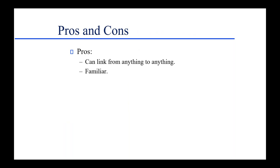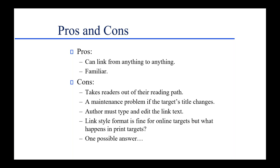What are the pros and cons? There are a couple of really powerful pros: first, you can link from anything to anything — from a word out to an external URL, from a graphic to another topic in your Flare project, from a word to an external PDF file. And it's familiar, because at this point almost anybody we're likely to run into has been on the web and knows what a hyperlink is.